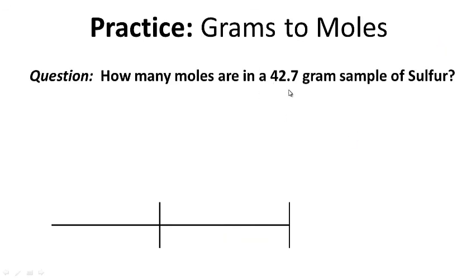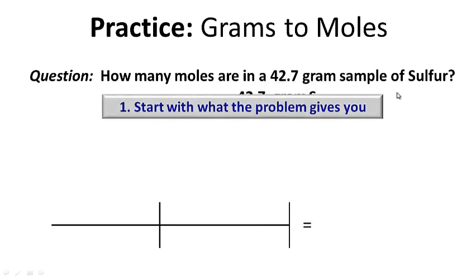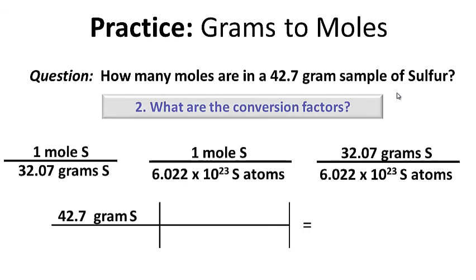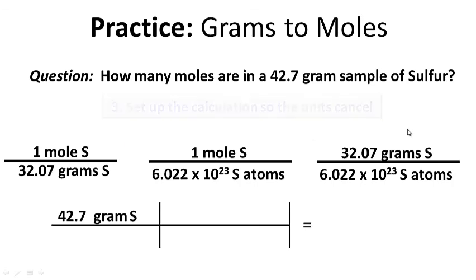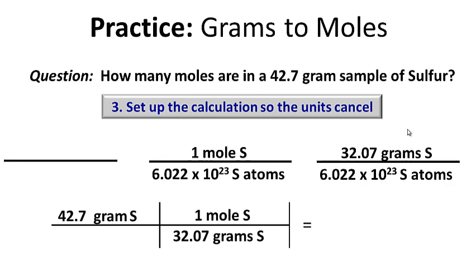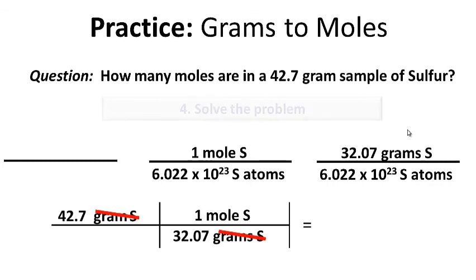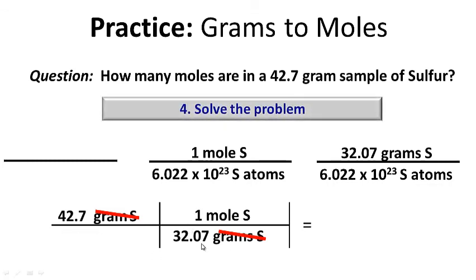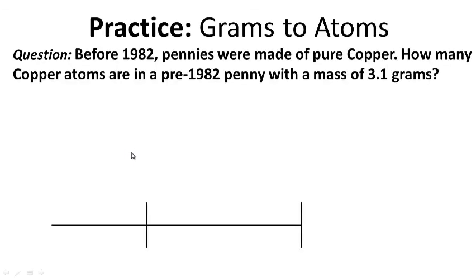How many moles are in a 42.7-gram sample of sulfur? Start with what the problem gives you: 42.7 grams of sulfur. The question involves moles and grams, so use the conversion factor that relates moles and grams. Set up the calculation so that grams cancel — place grams in the denominator and moles on top. Solve: 42.7 times one divided by 32.07 gives us 1.3 moles of sulfur. Hopefully you got that right.